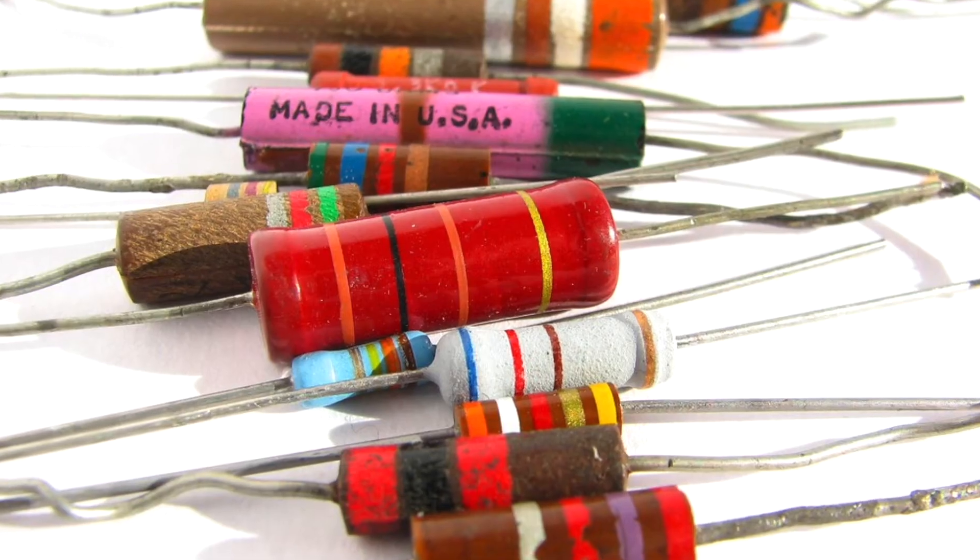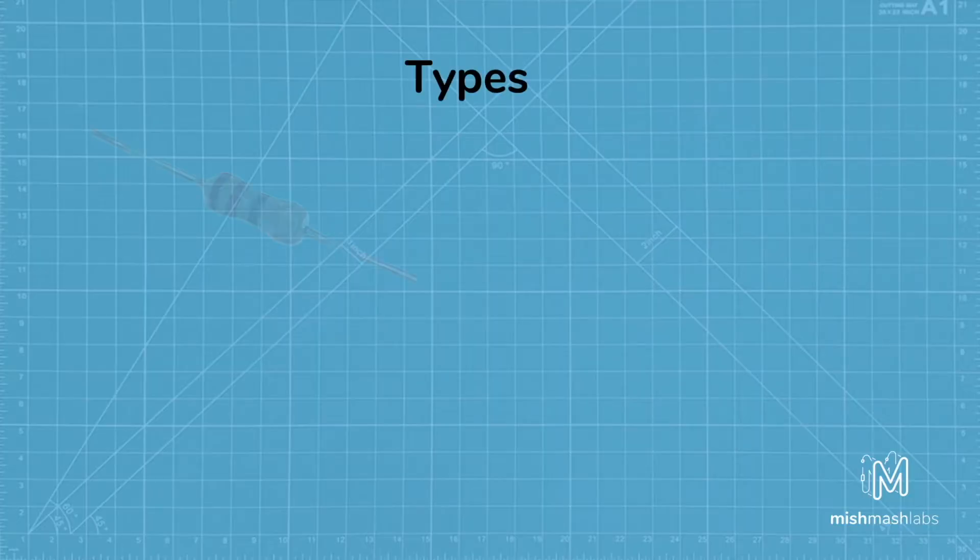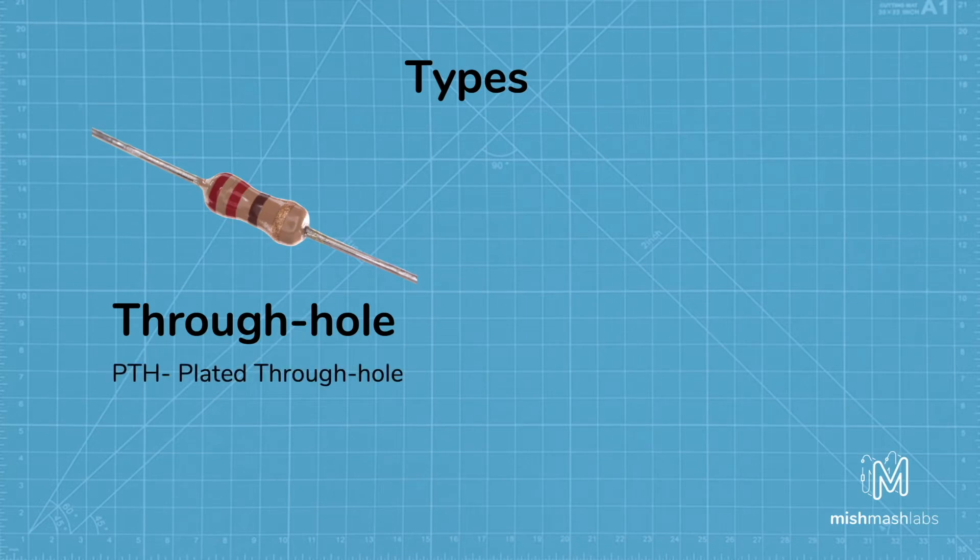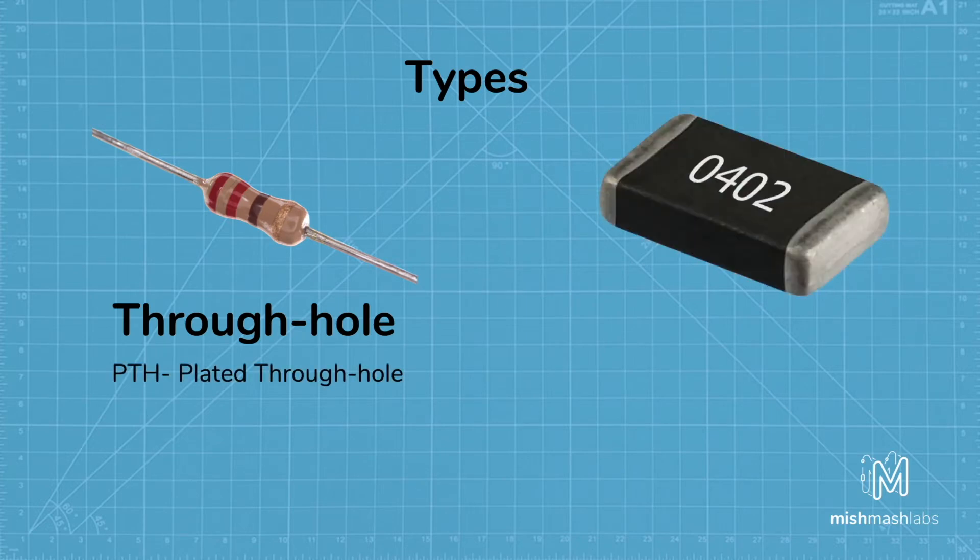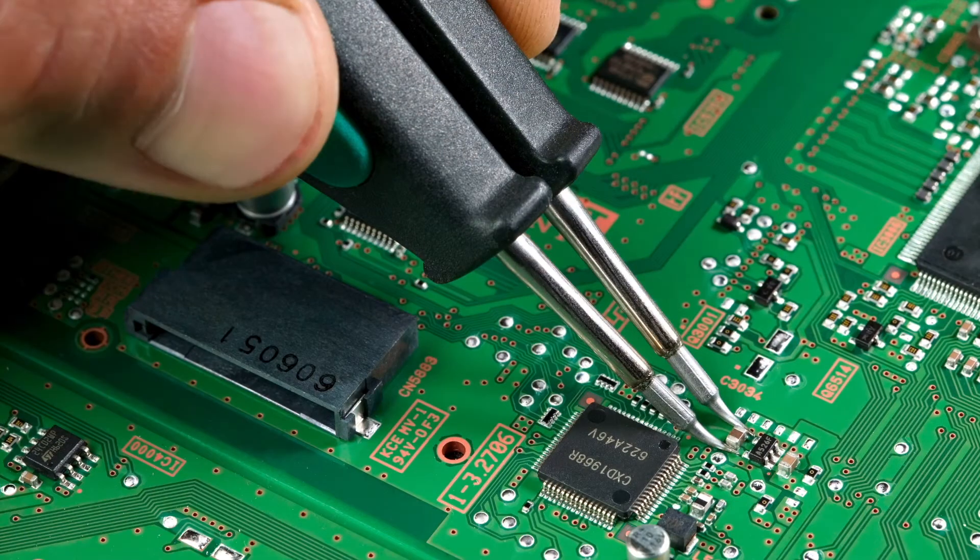Resistors come in a lot of different shapes and sizes. The most common found are through hole, but you may also see some surface mount, the likes of which are used on printed circuit boards and are very small in size.